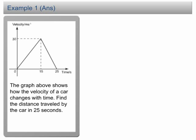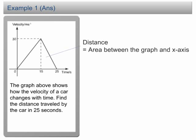In a velocity-time graph, the distance traveled is equal to the area between the graph and the x-axis. In this case, the graph forms a triangle with the x-axis, therefore the area is equal to half times 30 times 25, equal to 375 meters.